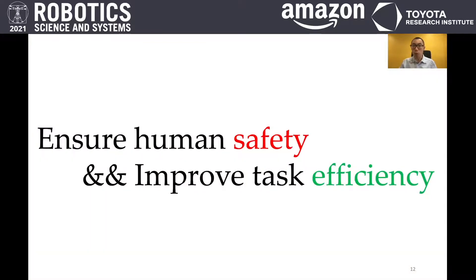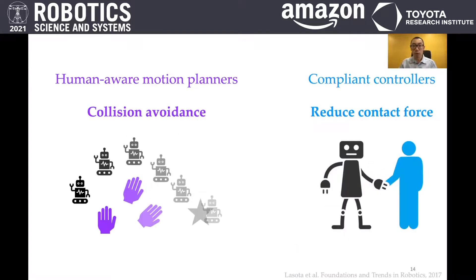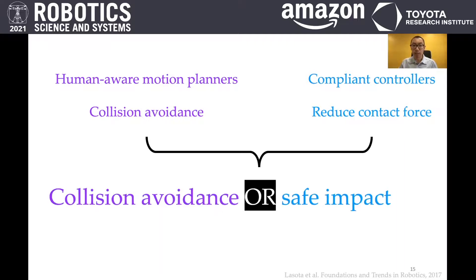In this work, we focus on ensuring human safety while at the same time improving task efficiency. Our key insight for improving task efficiency is to redefine safety as collision avoidance or safe impact during collisions. In previous work, human-aware motion planners define safety as collision avoidance while compliant controllers define safety as reducing contact force. Our work combines insights from both fields and defines safety as collision avoidance or safe impact during collisions.